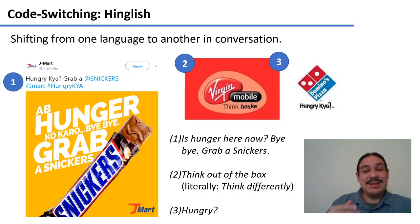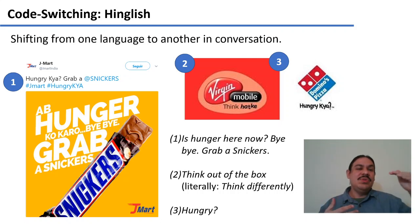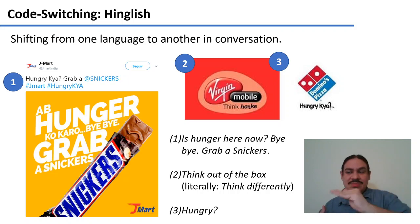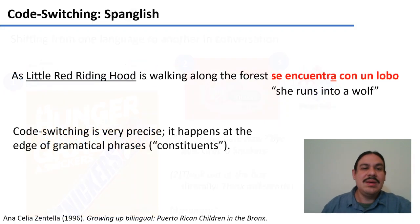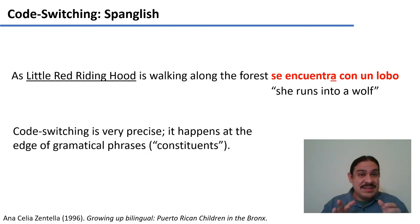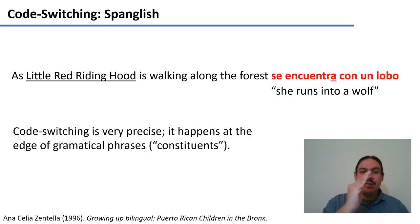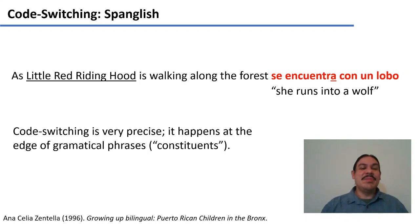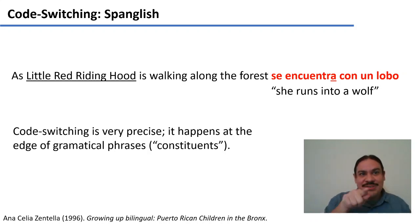Another example: "Think differently, think hatke." As you can see, you can begin with one language and end in a different one, going in and out between the two. This is not at all a chaotic or random process — it's the complete opposite. It is a very precise switching between them, and it mostly happens at the edge of grammatical phrases, at the edge of constituents. So code switching happens at the edge of constituents.